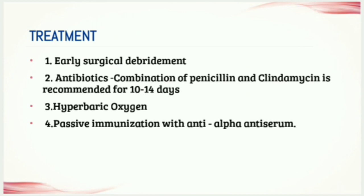For treatment of gas gangrene, the most crucial step is early surgical debridement. All devitalized tissues with very low oxygen content should be widely resected to remove the anaerobic environment. Recommended antibiotics are the combination of penicillin and clindamycin for 10 to 14 days. Hyperbaric oxygen therapy may kill anaerobic Clostridia such as Clostridium perfringens; however, for aerotolerant species like Clostridium septicum, hyperbaric oxygen therapy won't work. Passive immunization is done with anti-alpha toxin antiserum.